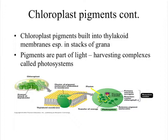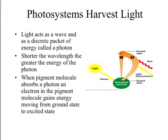These chloroplast pigments — chlorophyll A, chlorophyll B, and the carotenoids — are built into the thylakoid membrane within the chloroplast. Remember, those thylakoids are stacked as grana inside the inner membrane of the chloroplast. Within each thylakoid disc, in the membrane that surrounds it, is where all of these pigments are located. They're part of what we call a light-harvesting complex called a photosystem, and these photosystems are responsible for harvesting light from the sun.